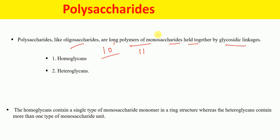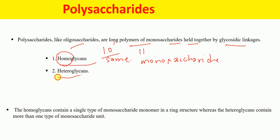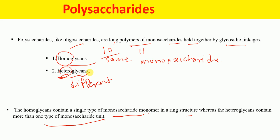Polysaccharides have been divided into two different classes: homoglycans and heteroglycans. 'Homo' means same — if a polysaccharide contains the same monosaccharide unit, it is called a homoglycan. 'Hetero' means different — if the polysaccharide contains different monosaccharide units, it is called a heteroglycan. So homoglycans contain only one type of monosaccharide monomer, whereas heteroglycans contain more than one type.